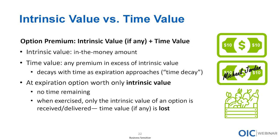When it comes to options, there are two components in pricing: intrinsic value and time value (also called extrinsic value). Intrinsic value is the in-the-money amount — only in-the-money contracts have intrinsic value. Think of a $10 bill — it's inherently worth $10. But if that $10 bill was signed by Michael Jordan, it might be worth $20. Regardless of the signature, that bill is still worth $10 at a minimum — the signature is the extrinsic value. With options, what makes it worth more is time until expiration, implied volatility, dividends, and interest rates.